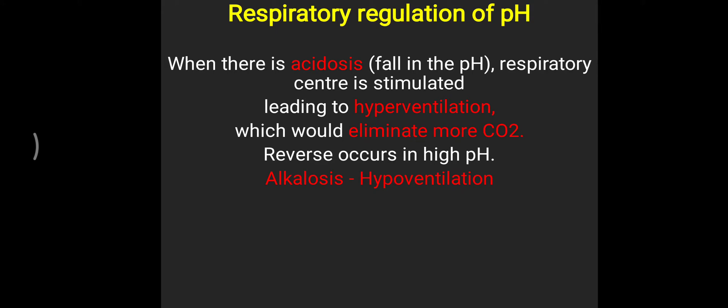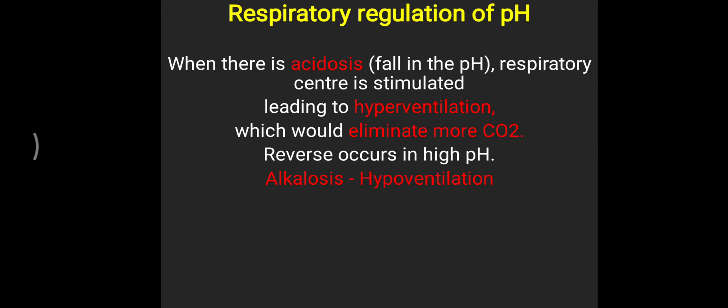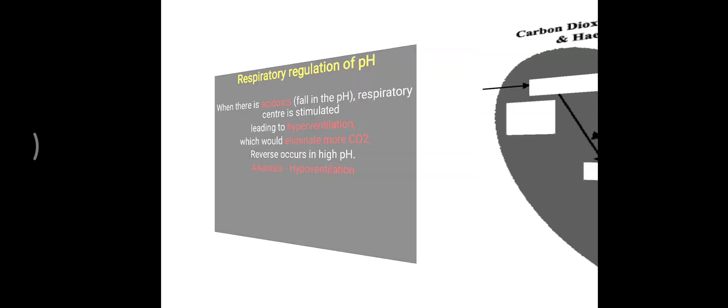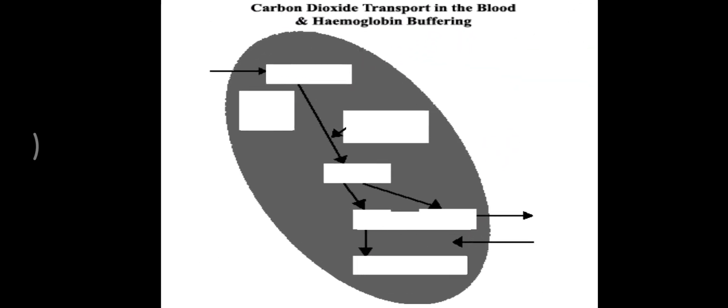Exactly the reverse will occur with high pH — when pH goes above 7.45, hypoventilation will occur. Carbon dioxide will not be eliminated from the body; it will remain inside, and that helps to again maintain our pH near 7.35 to 7.45.